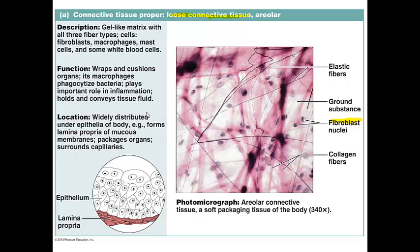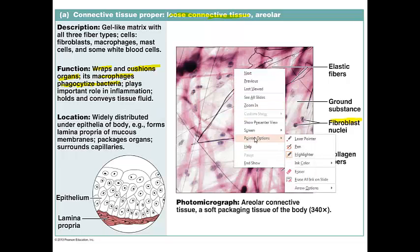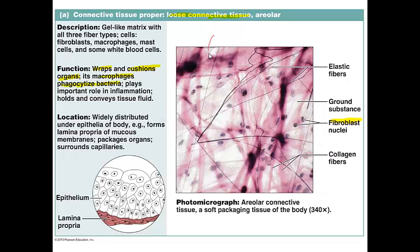Areolar connective tissue acts somewhat like a reservoir for water and salt, and it surrounds a lot of body tissue — wrapping and cushioning various organs. Macrophages phagocytize bacteria, so it plays an important role in inflammation. There's a high content of hyaluronic acid, making the extracellular matrix very thick and viscous, somewhat like the consistency of molasses. When there is edema, this areolar tissue tends to soak up excess fluid like a sponge.